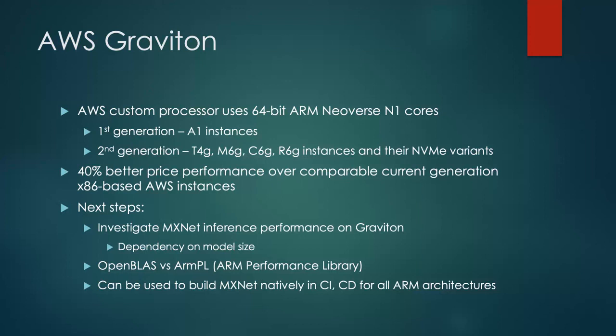The next steps would be to investigate MXNet inference performance on Graviton for models of different sizes. Just like MKL BLAS can give speed-ups over OpenBLAS for x86 architectures, ARM Performance Library needs to be evaluated against OpenBLAS for performance. AWS Graviton instances can also be used to build MXNet natively in CI and CD for all ARM architectures.